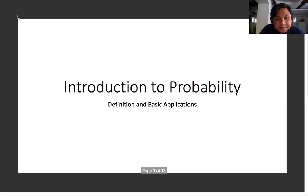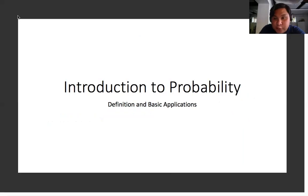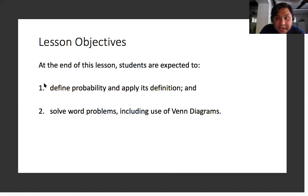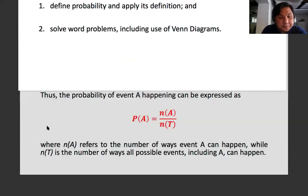Now that this is out of the way, let us begin with our lesson for the week, which is probability. So introduction to probability — we'll start off with something easy, like what we did with counting. The lesson objectives are that students are expected to define probability and apply its definition. The harder part will be solving word problems that ask about probability, including the use of Venn diagrams. We will encounter a particular problem where definition alone will not be sufficient and we'll need to use Venn diagrams to clarify things.